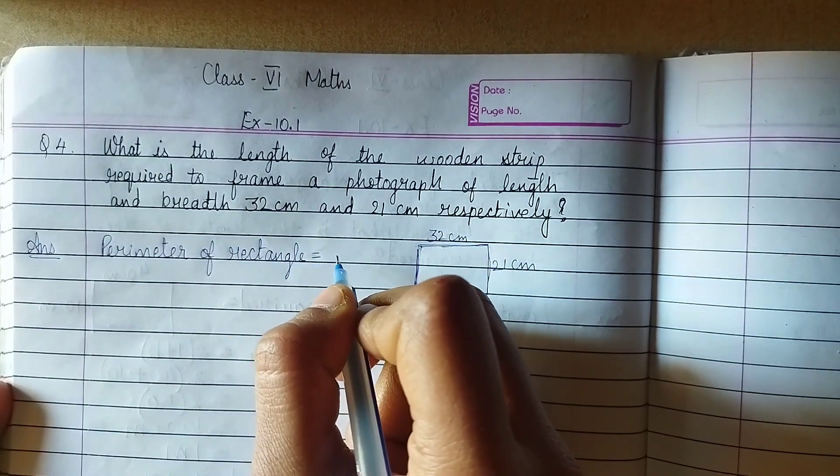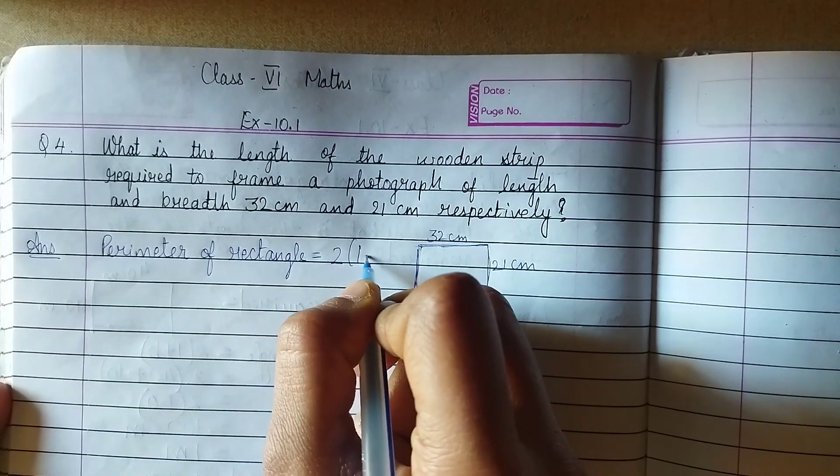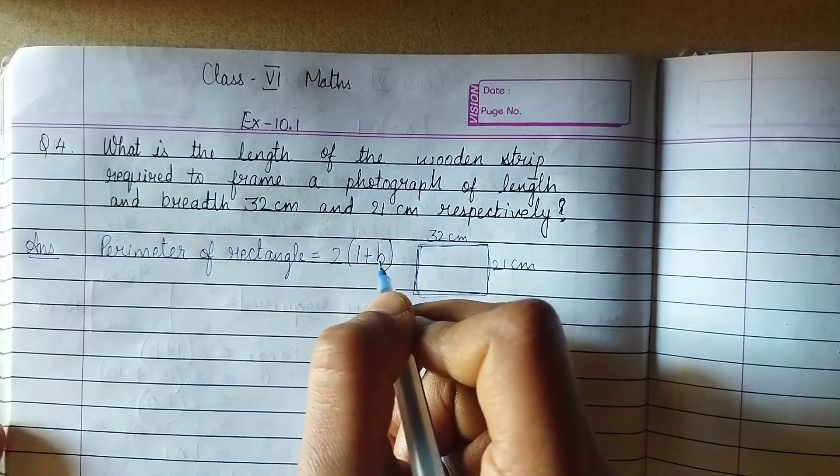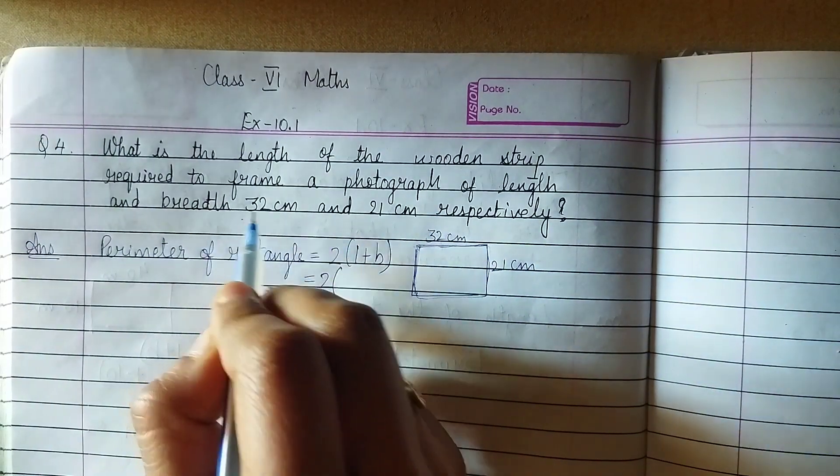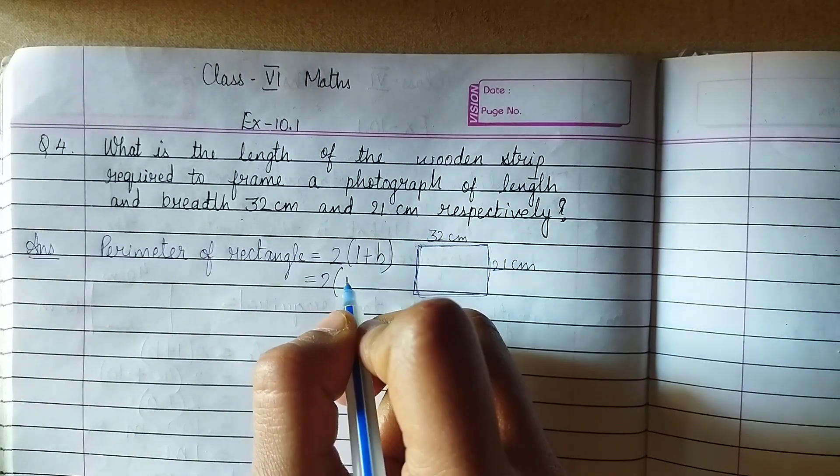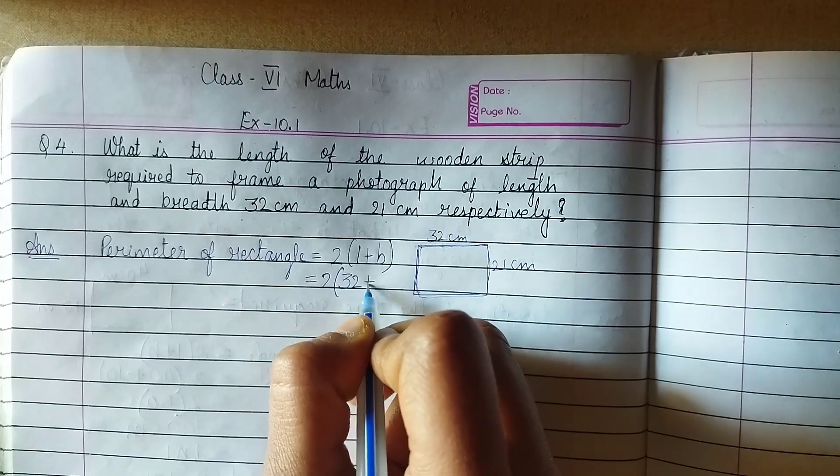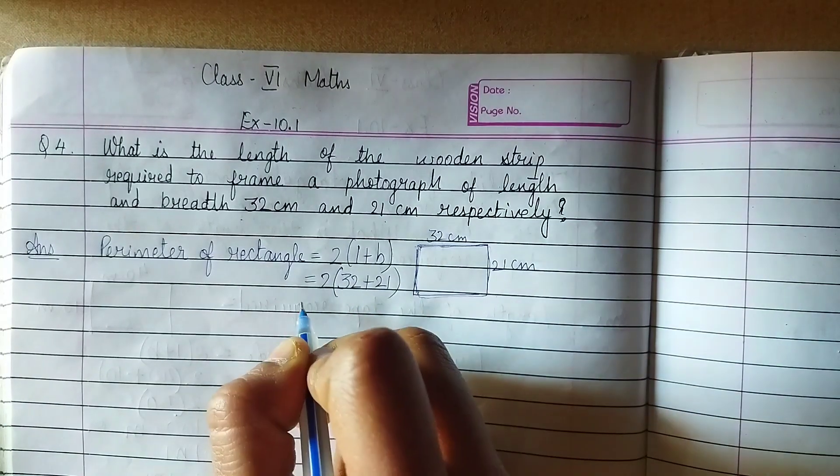Perimeter of rectangle ka formula hata hai: 2 into length plus breadth. 2 multiply by what is length? Length is 32, breadth is 21. Length 32 cm plus breadth hai 21 cm.